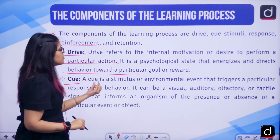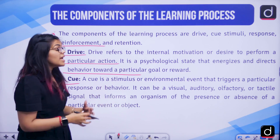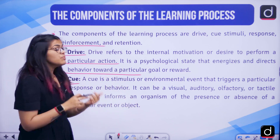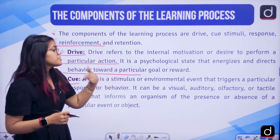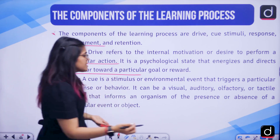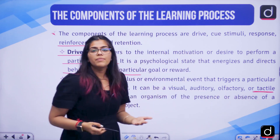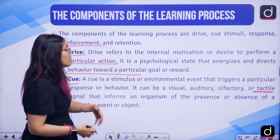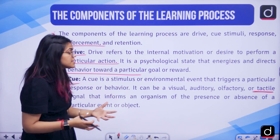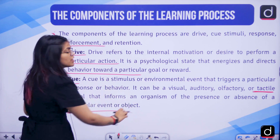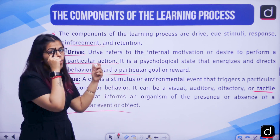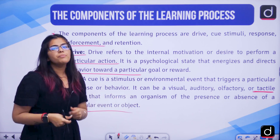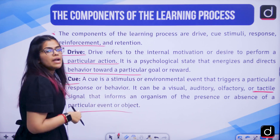A cue is a stimulus or environmental event that triggers a particular response or behavior. It can be visual, auditory, olfactory, or tactile — kinesthetics, body movement, psychomotor developments — signals that inform the organism about the presence or absence of a particular event or object. If you have all of these cues, you will perform the action; these are like triggers that activate your behavioral pattern.